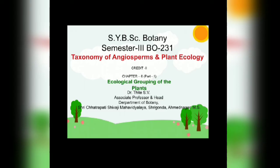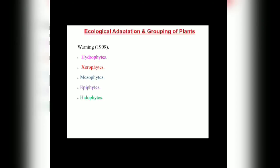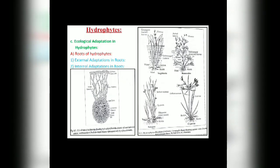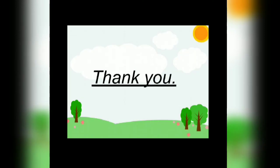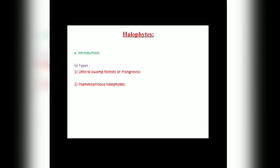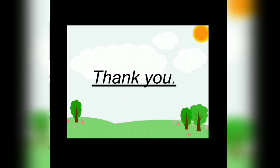The next point is the halophytic stem. First we see external adaptations in stem. Morphologically the stem shows regular characteristics like mesophytes. The stem is hard and branched, bark is hard and can be peeled off naturally. Then the next point is internal adaptations in stem.